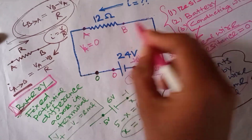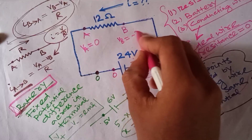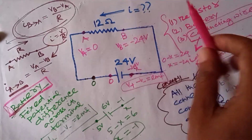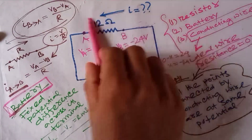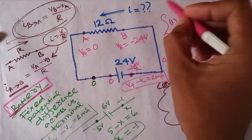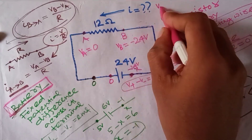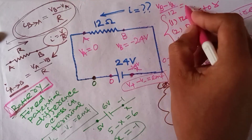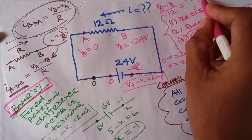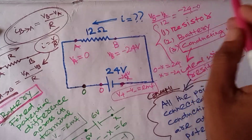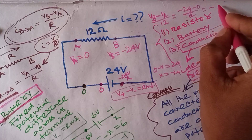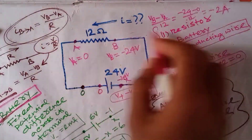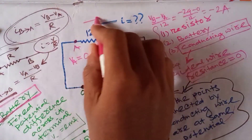So point B has a potential of minus 24V. Now I want to find the current flowing in this direction. Using Ohm's law: I equals VB minus VA divided by resistance, which is minus 24 minus 0 divided by 12, giving minus 2A. Since the result is minus 2A in the assumed direction, it means 2A flows in the opposite direction.